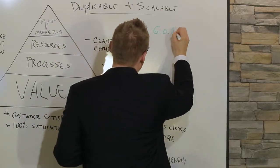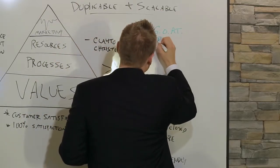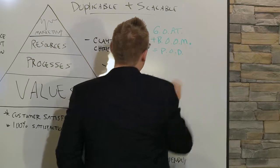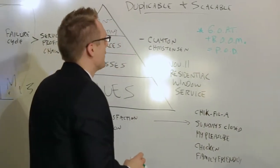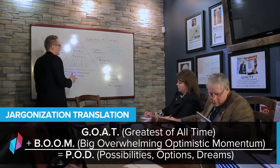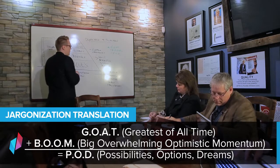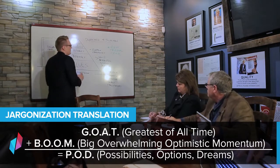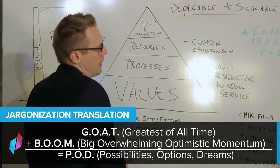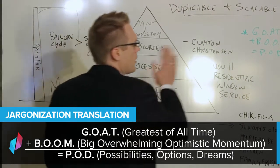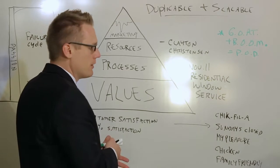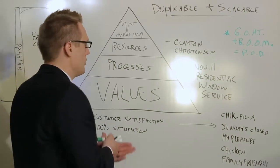It's GOAT plus BOOM equals POD. It's not weird math. So here we go. So the GOAT stands for the Greatest of All Time. The BOOM stands for Big, Overwhelming, Optimistic Momentum. And the P equals Possibilities, Options, and Dreams. And I know you guys are taking notes, so I'm not going to rush you. But GOAT, again, G is the Greatest of All Time. BOOM equals Big, Overwhelming, Optimistic Momentum. POD equals Possibilities, Options, and Dreams.